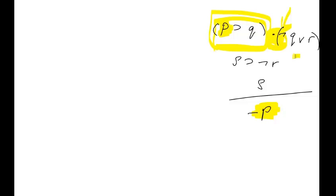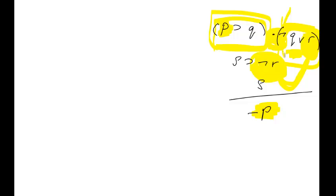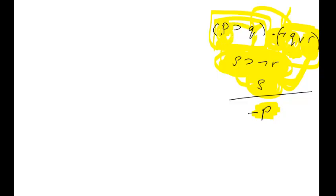Where is ¬q? It's trapped inside the disjunction. By disjunctive syllogism, if we find the negation of one of the disjuncts, we can conclude the other. So we need the negation of r — and lo and behold, it's right here. ¬r allows us to use disjunctive syllogism on the disjunction, giving us ¬q. Then ¬q with modus tollens gives ¬p. And we get ¬r from s via the conditional s→¬r and modus ponens.